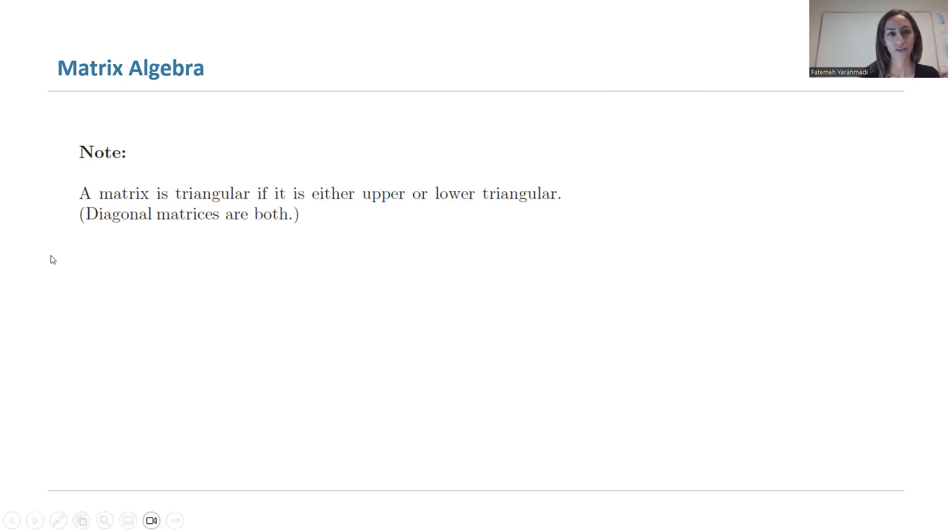a matrix is called a triangular matrix if it's either upper or lower triangular. As we define diagonal matrices, diagonal matrices are both. They are both upper and lower triangular.